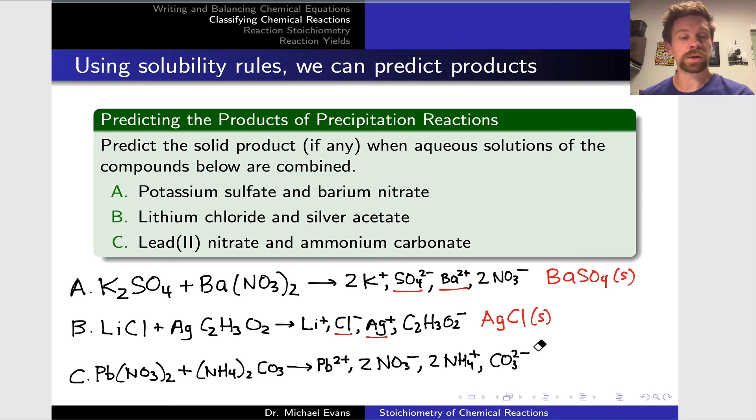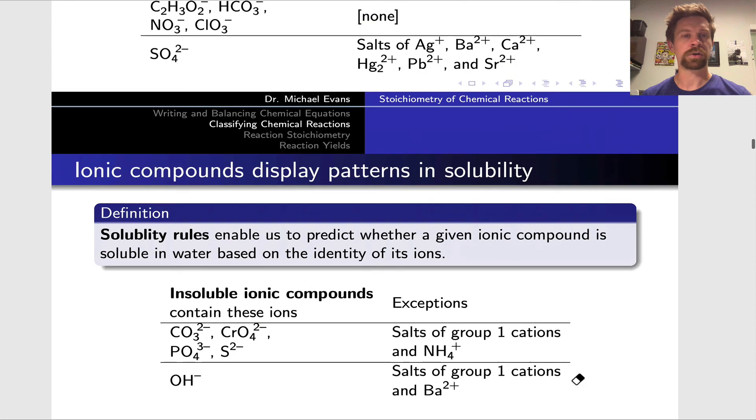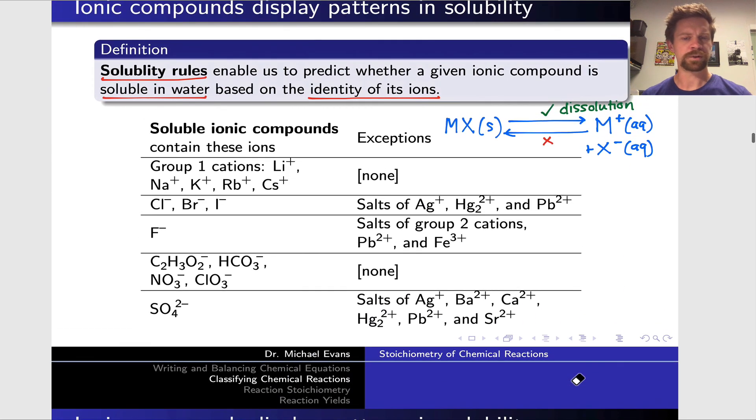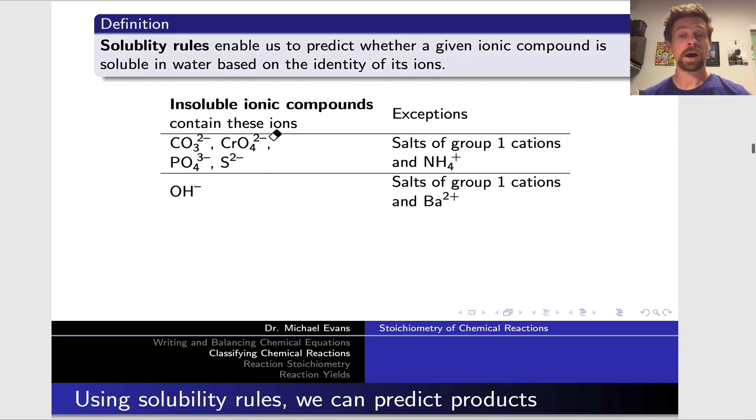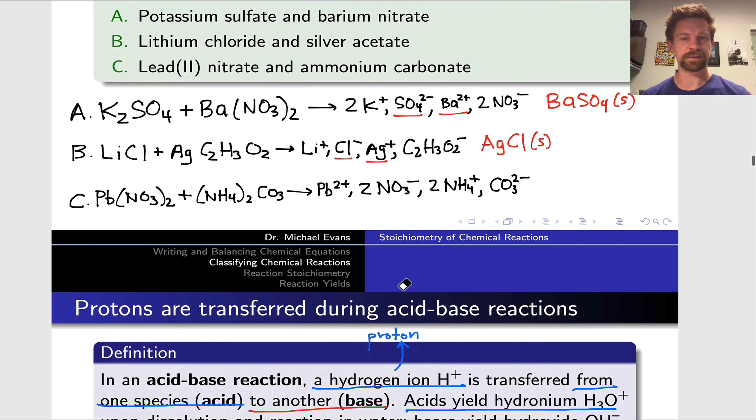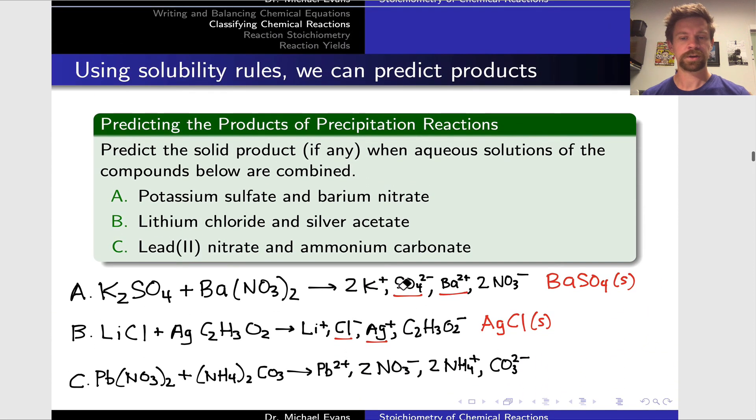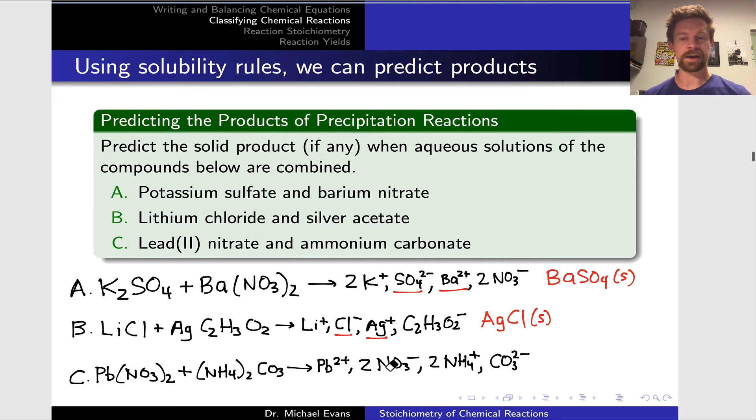Finally, we have lead nitrate and ammonium carbonate. So Pb2+, NO3-, NH4+, and CO3 2-. Nitrate is soluble in everything. We've seen that previously. And ammonium salts are also soluble in pretty much everything. Except here, ammonium carbonate is soluble. And ammonium nitrate, because it's a nitrate, is also soluble. So those are out.